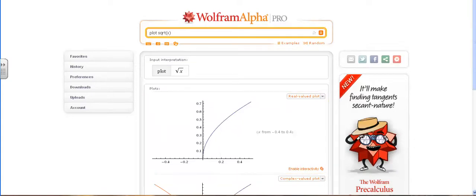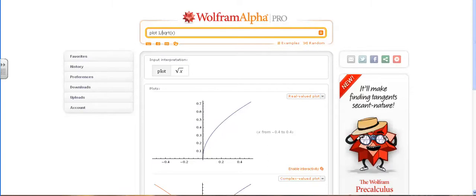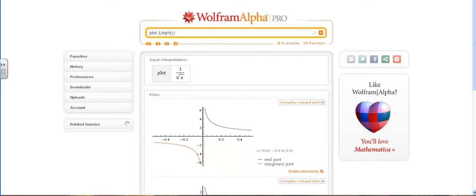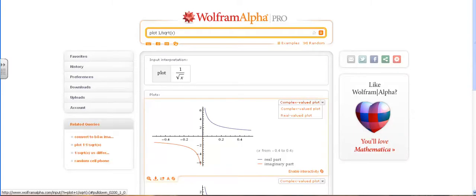The reciprocal function, say 1 over square root of x. Again, Wolfram Alpha returns both the real part and the imaginary part. But if you only want to see the real values, switch it to real value plot.